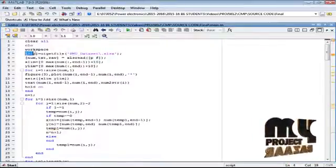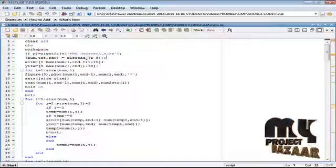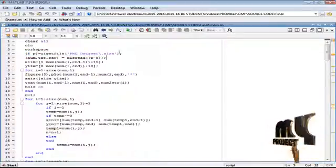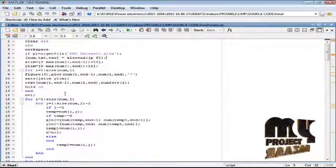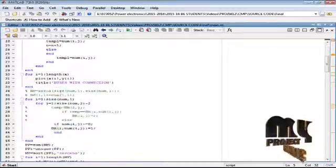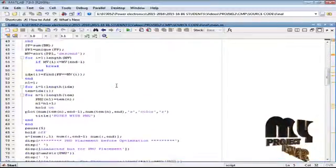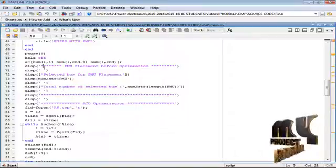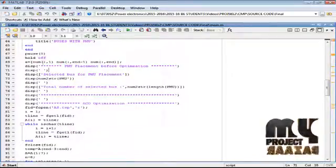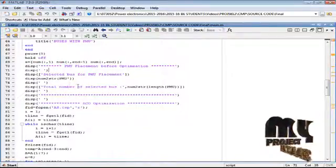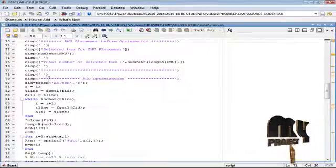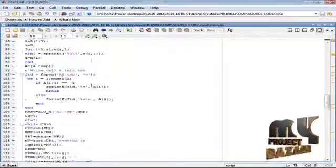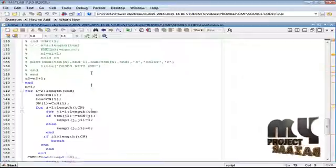This is our main coding. This is the function to get files for PMU data set from Excel. These are the functions. This is the process of connections. PMU placement before optimization and after optimization for ACO optimization, this method is used for the PMU.